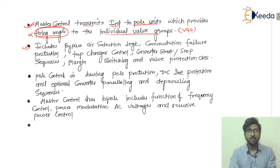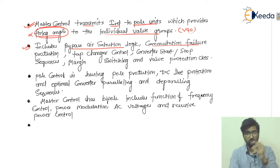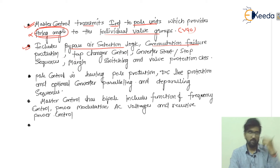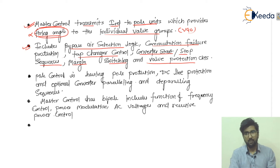The pole control also includes bypass pair selection logic. Commutation failure — which is the transfer of current from one valve to another within the same group, either the positive or negative group, upper or lower commutation portion — is handled here. Other functions include tap changer control, converter start and stop sequences, margin switching, and valve protection circuits.